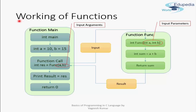Now let us learn the working of a function — how a function gets called and how it works. Here we have our main function in C, which always has an integer return type. Suppose we have declared two variables a and b, and we have a function func that takes int a and int b and also returns an integer.